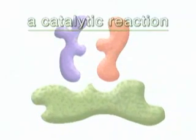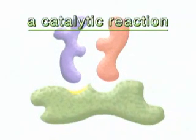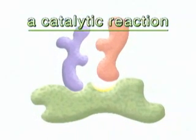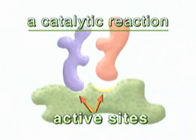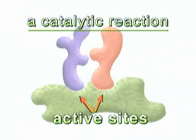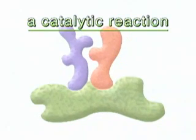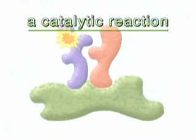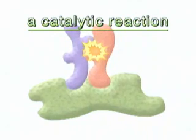For a catalytic reaction to occur, a substrate must fit into a groove on the surface of the enzyme called the active site, so that many of its atoms nudge up against the atoms of the enzyme. Reorienting the molecules in this way reduces the amount of energy needed to activate the reaction.